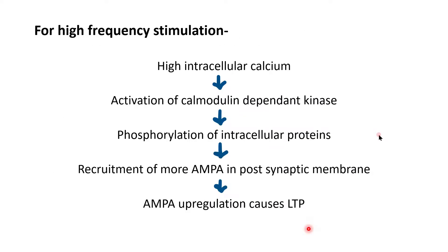In the case of very high-frequency stimulation, there is a very high increase in intracellular calcium, which activates calmodulin-dependent protein kinases. These kinases phosphorylate intracellular proteins, and as a result there will be recruitment of more AMPA receptors — AMPA upregulation — which causes long-term potentiation.